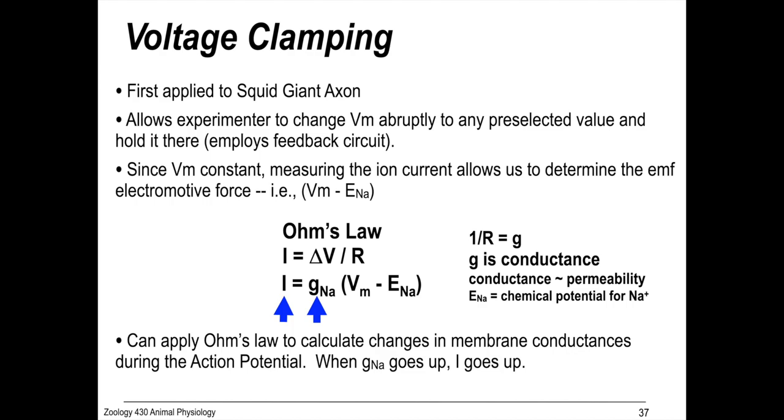Put another way, current is voltage times conductance, which is the reciprocal of resistance. Conductance, remember, is proportional to permeability, so how free are the ions to flow in or out of the cell?